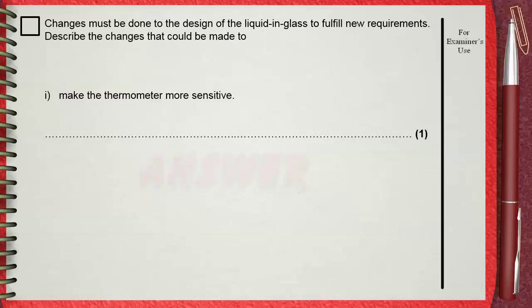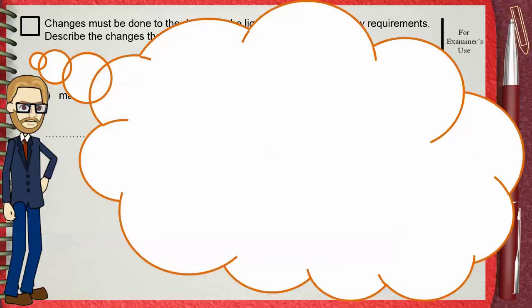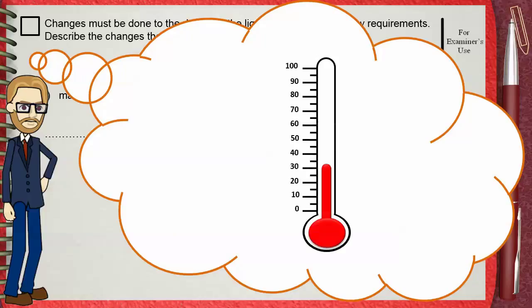Making a thermometer more sensitive is to increase the spacing between degrees. If this is our thermometer, you can increase spacing between degrees for the same temperature change by using a thinner capillary tube.